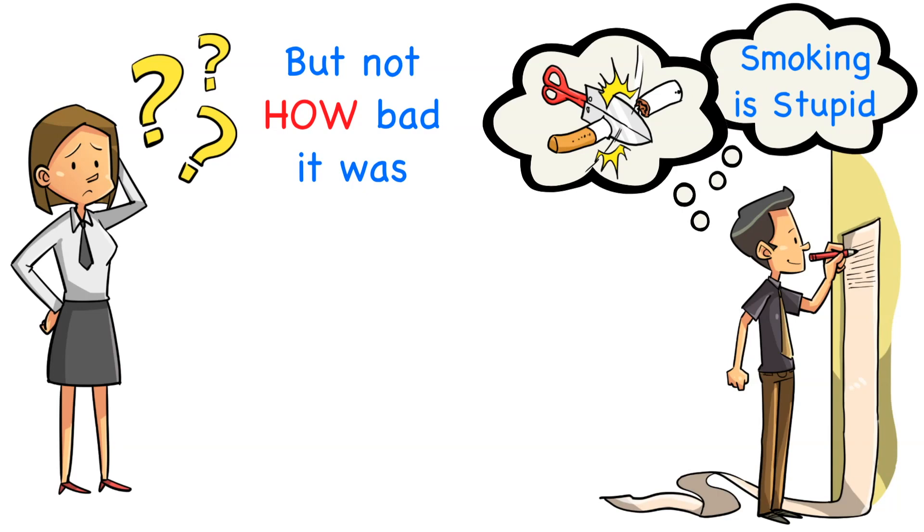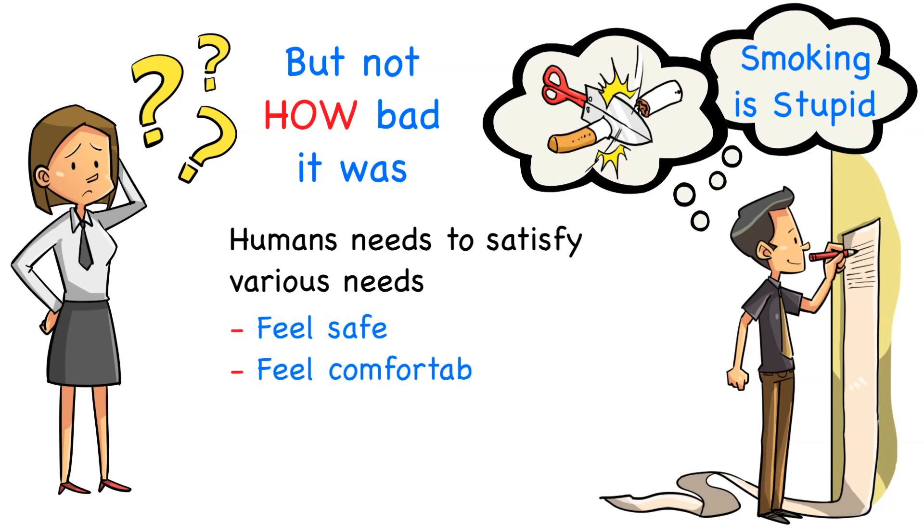All your behavior is driven by various innate human desires. Every human needs to satisfy various needs. Some of them are feel safe, feel comfortable, feel successful, feel healthy, feel loved, and feel appreciated and valued. Notice that all are related to feeling something.